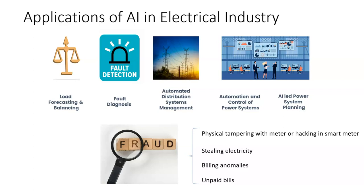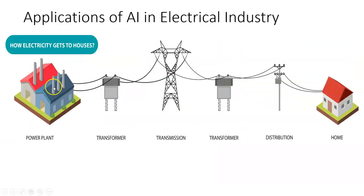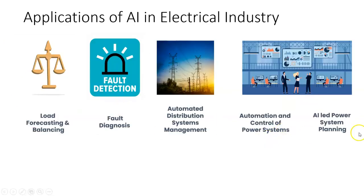Whether it is fraud or inefficiency, leakages happen in any one or more of these areas all the time. The point is: use AI to prevent leakages, use AI to predict leakages — that's a huge opportunity area for the electrical industry. The automation of control systems, automated management of distribution systems, and load forecasting are all areas where AI is applied to a limited extent in the electricity industry today. As AI becomes more advanced, I am very confident that the electrical industry will embrace AI more than what it does today.